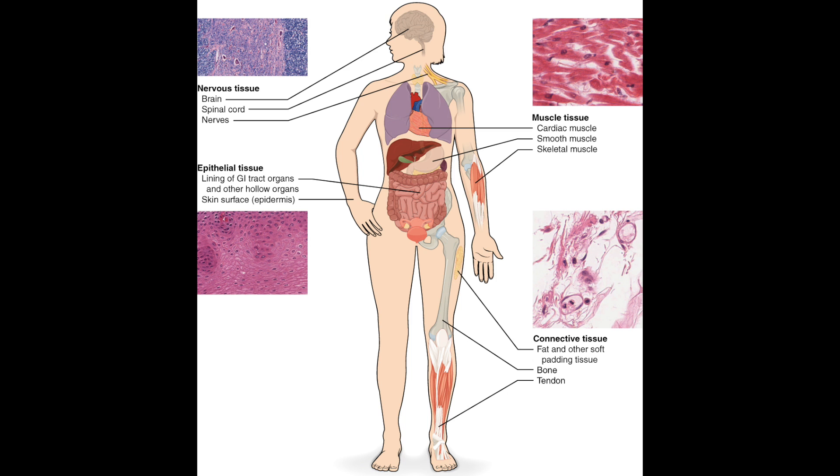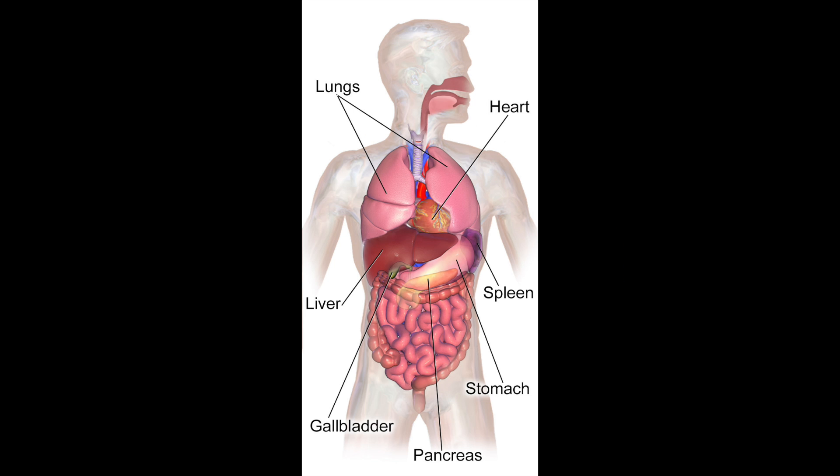Next we'll go on to organs, which is directly related to tissues because organs are made of tissues. The stomach is one of the main organs you have to know, and it is an organ made of many things.